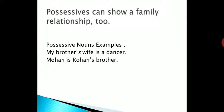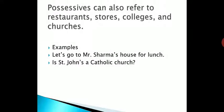Possessive can show a family relationship too — it shows ownership as well as relation. Like, 'my brother's wife is a dancer' — showing the relationship between brother and his wife. 'Mohan is Rohan's brother' — showing the relationship between Mohan and Rohan. Possessive can also refer to a restaurant, store, colleges, and churches. For example, 'let's go to Mr. Sharma's house for lunch' — the owner of that house is Mr. Sharma, so we use Sharma's with apostrophe S.